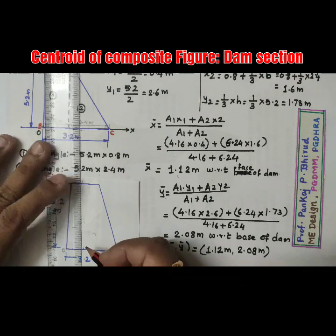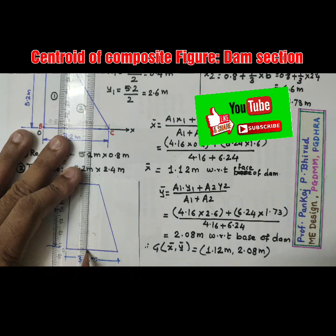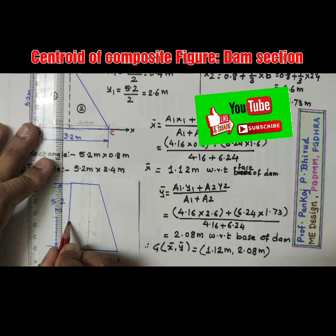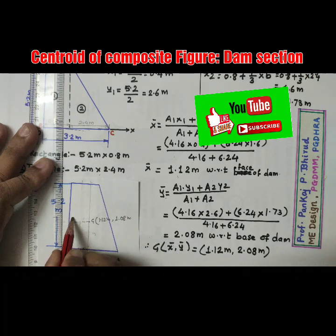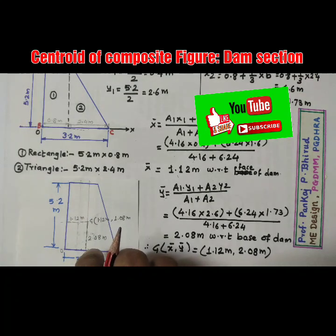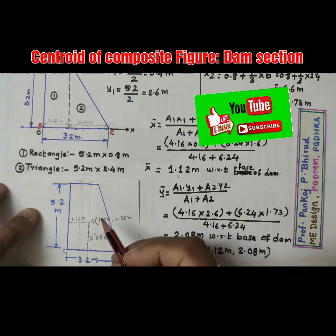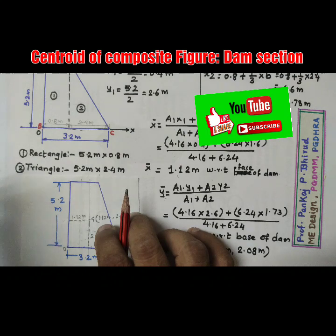Now we can show this centroid on the figure. X-bar = 1.12 m is the horizontal distance, so mark that point. The vertical distance Y-bar = 2.08 m, so mark that point. The centroid G is located at (1.12 m, 2.08 m). I hope you have enjoyed this lecture and understood how to calculate the centroid of the dam section. Please like, share, and subscribe to our channel for more engineering topic videos. Thank you.